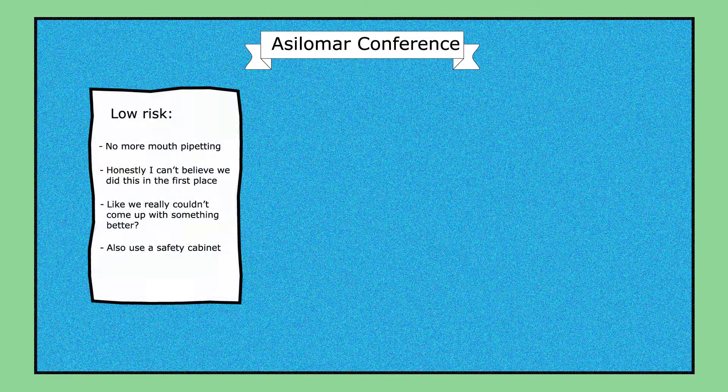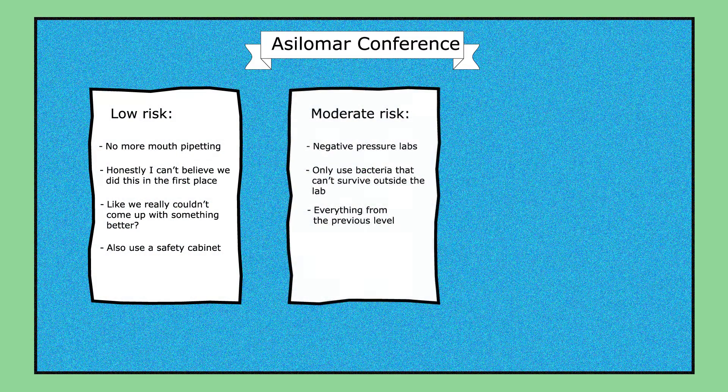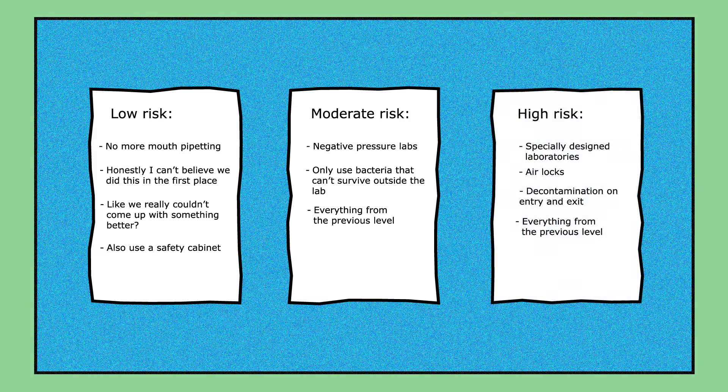Eventually, they settled on categorizing each kind of experiment into one of three risk levels, each with different containment procedures. These containments proved effective, even forming the basis of the official US government regulations in 1976.